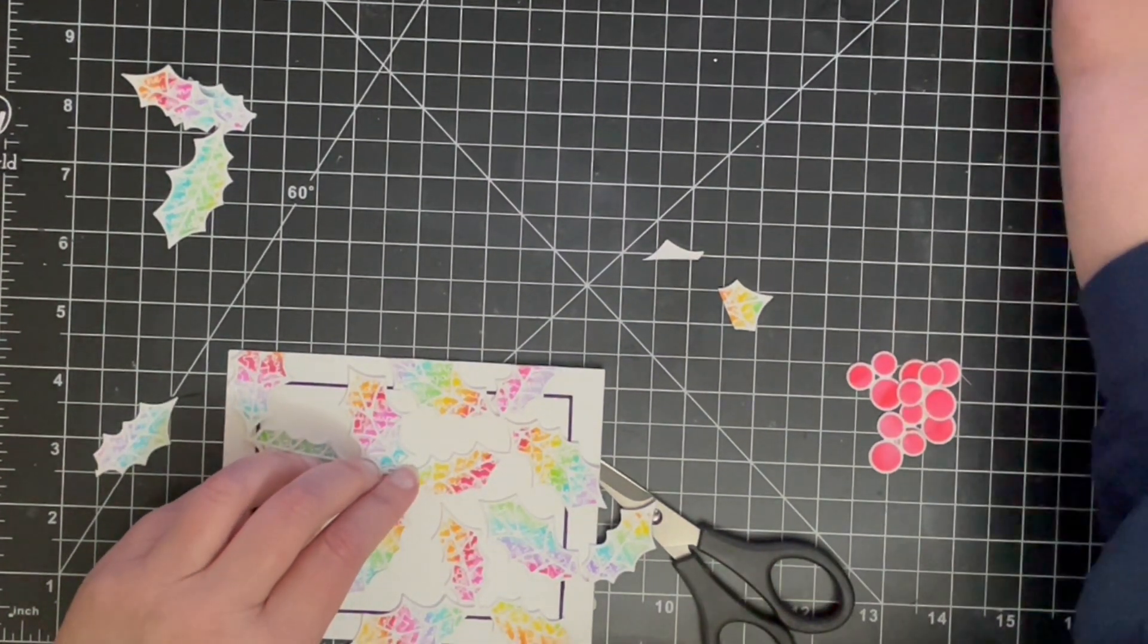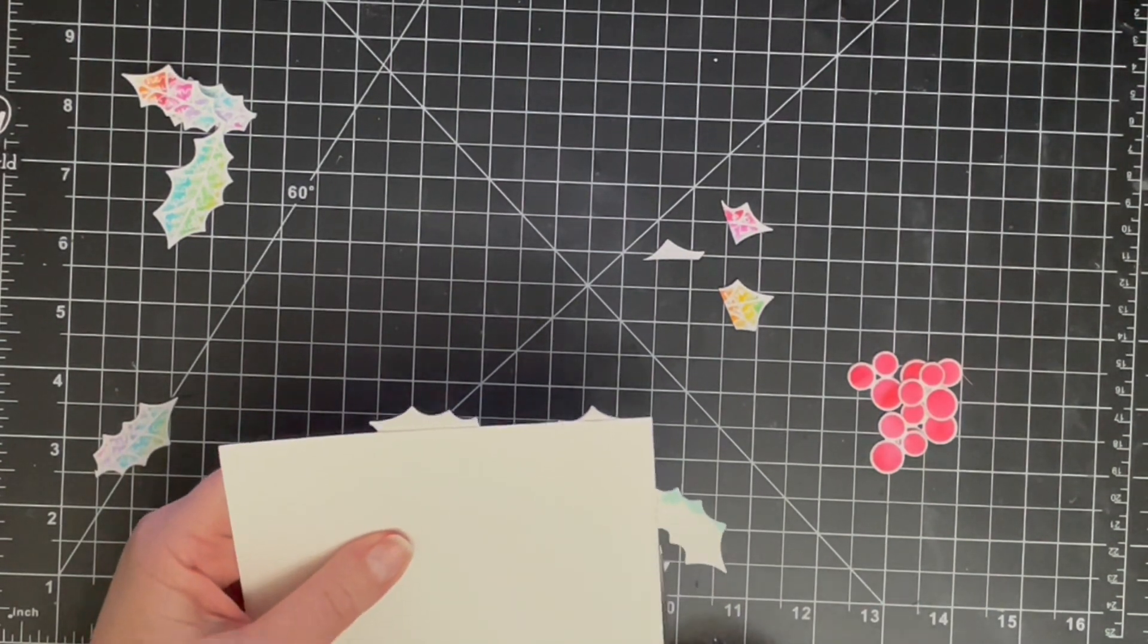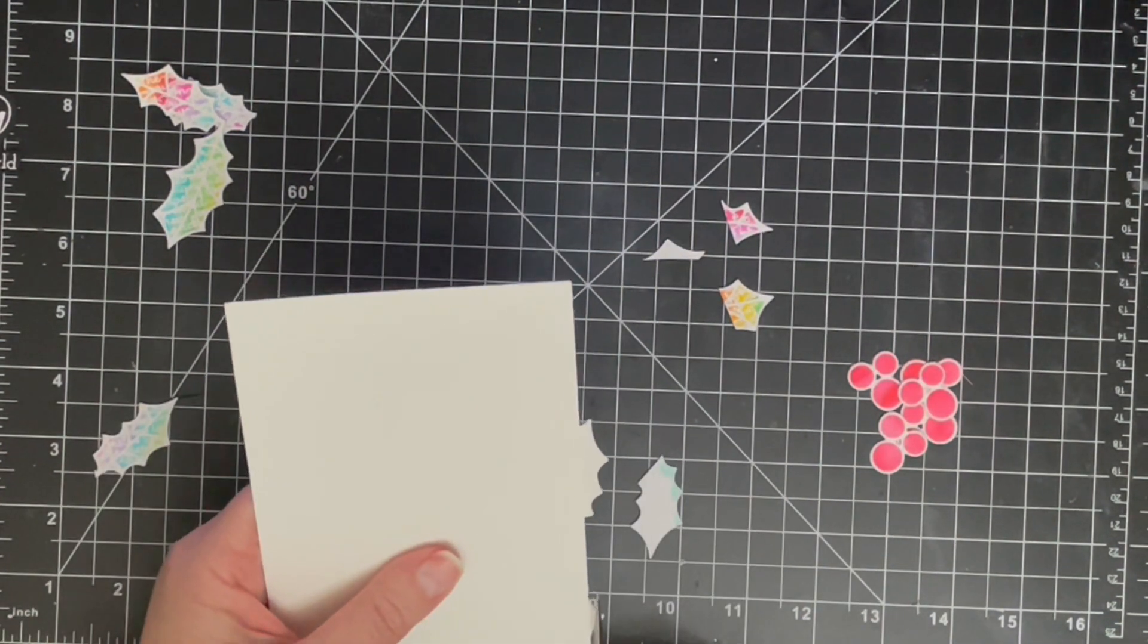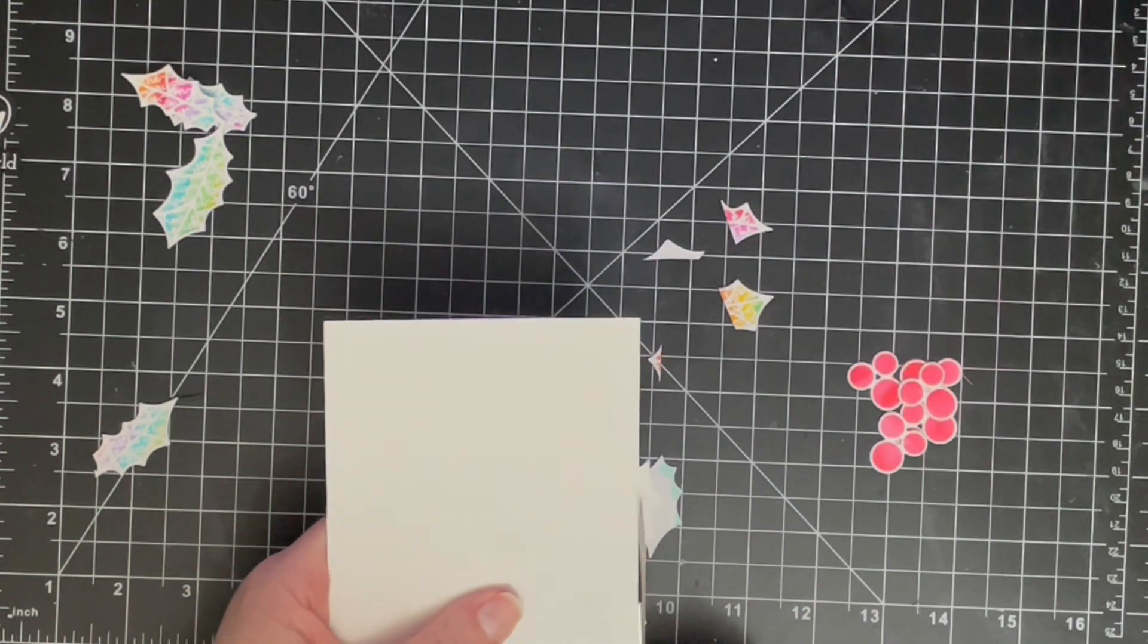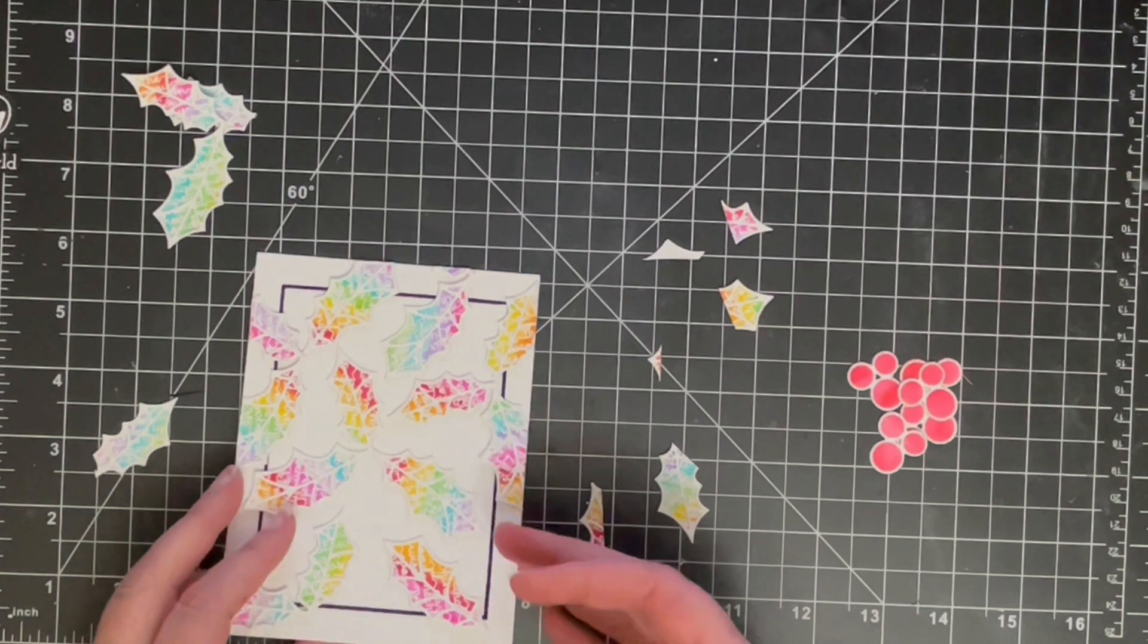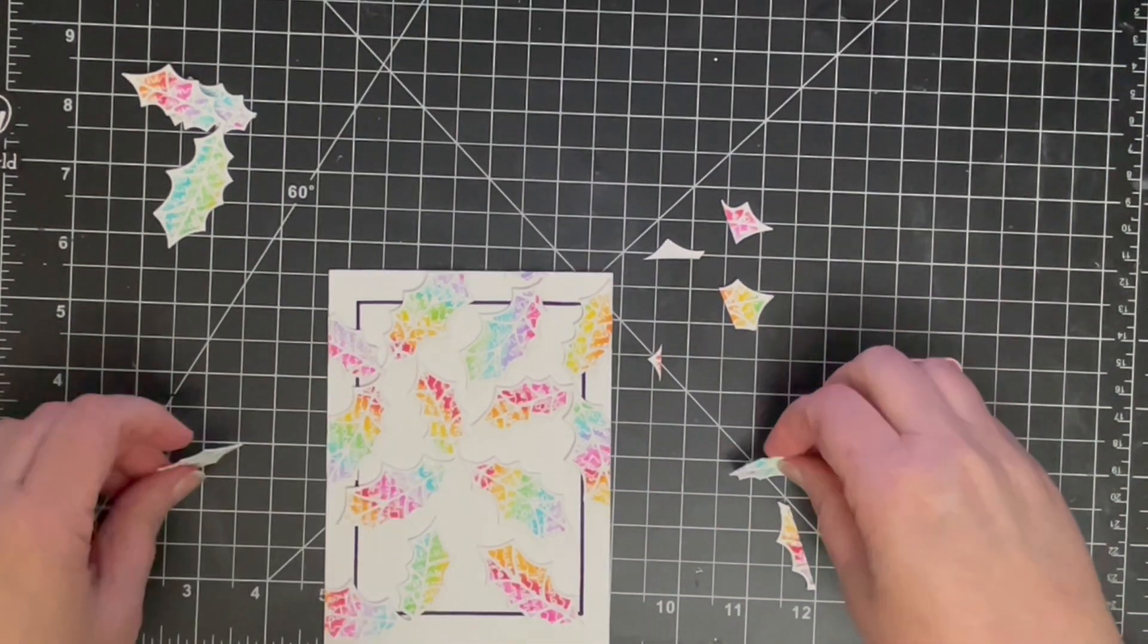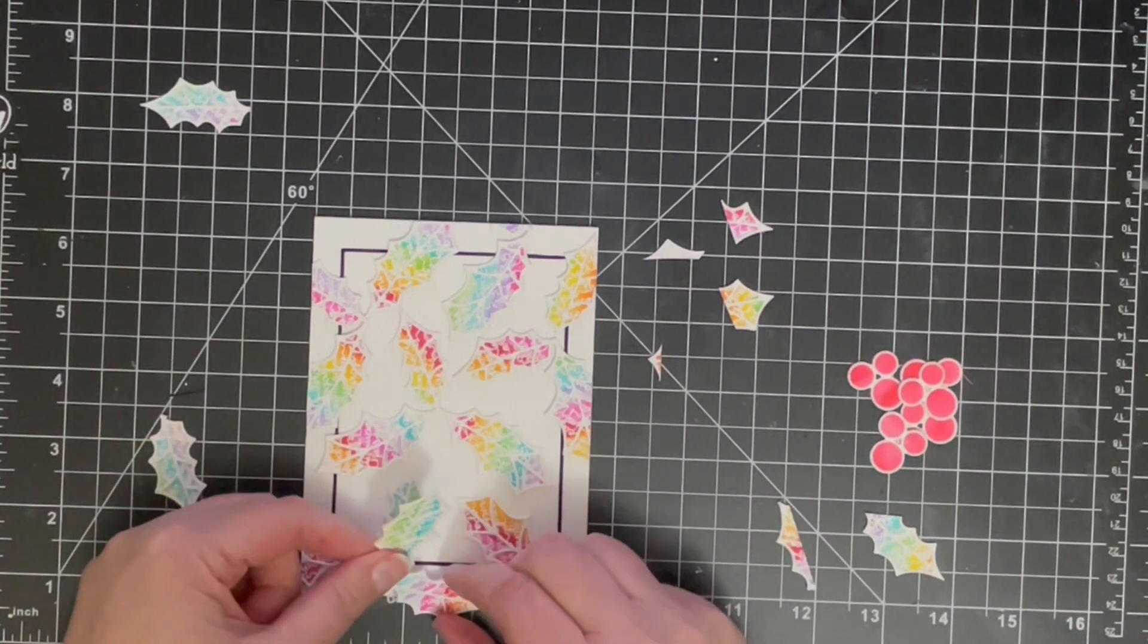Now I've also got lots of bits that are overlapping the edge of the card. Don't throw those away, because once I cut them off, I'm actually going to use some of them to just sort of fill in a few gaps around the edge of the card where there's a bit of empty space. You can always do that with these tiny little extra bits.